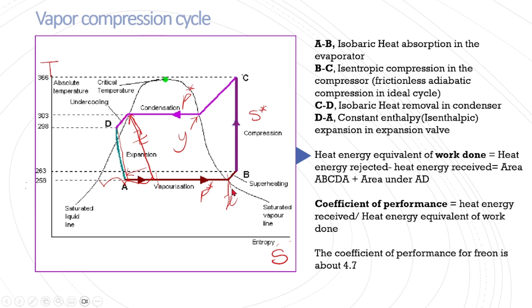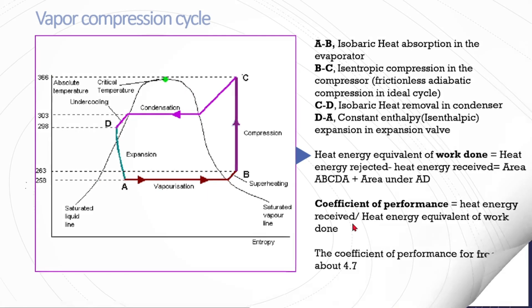Looking at the pressure-enthalpy (P-h) diagram: in the condenser pressure is constant; in the expansion valve pressure reduces from P2 to P1 with constant enthalpy; in the evaporator pressure is constant; in the compressor both enthalpy and pressure increase with constant entropy. Heat energy received from the cold chamber is the area under A-B; heat energy rejected in the condenser is area under C-D. Heat energy equivalent of work done equals heat energy rejected minus heat energy received, i.e., area under C-D minus area under A-B.